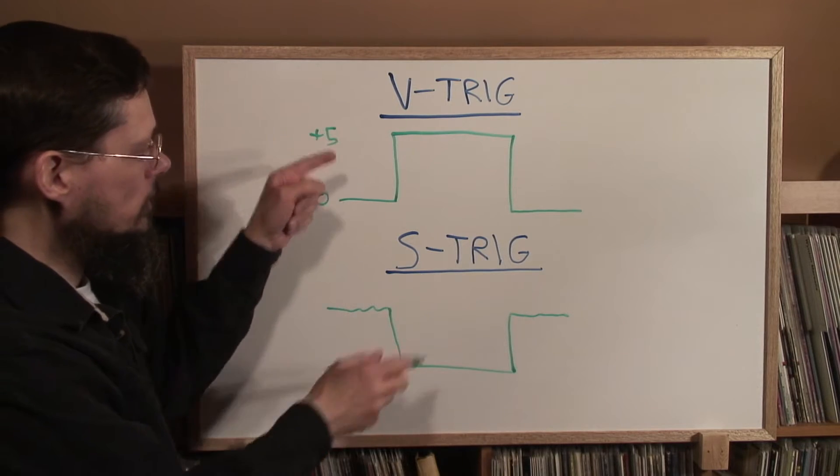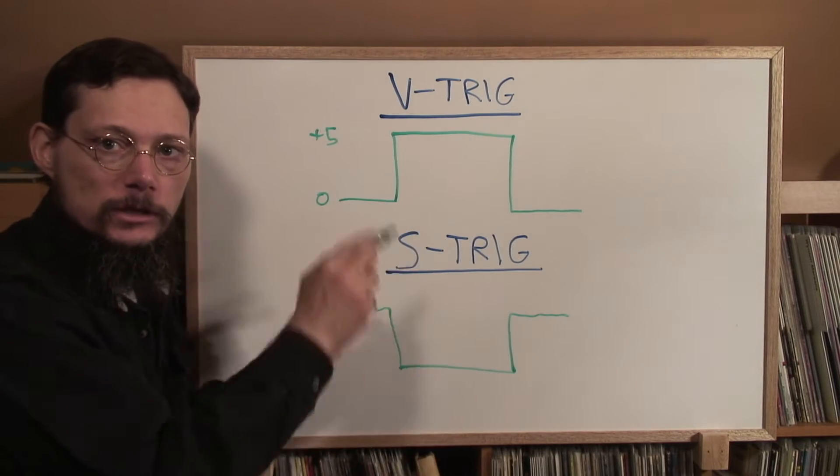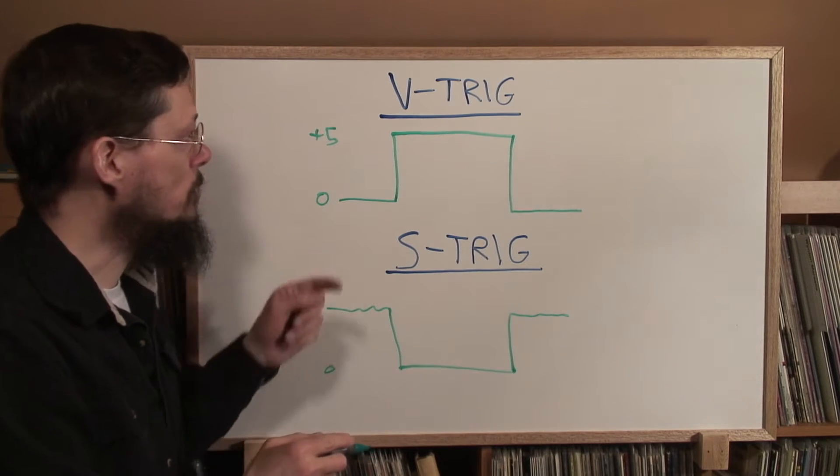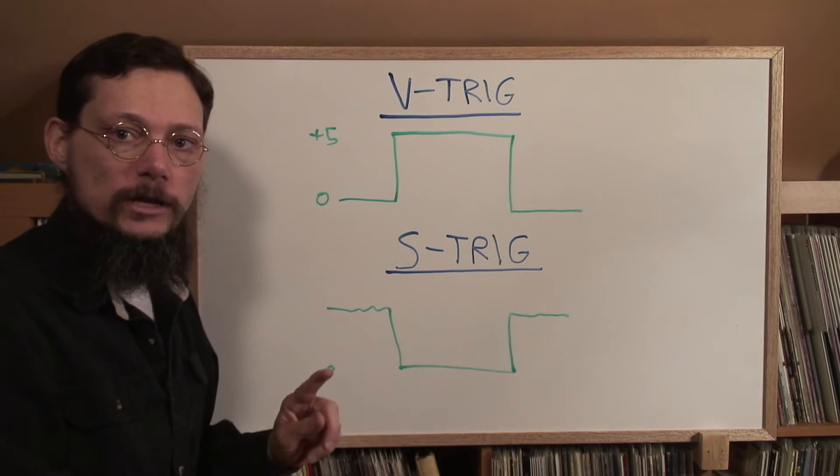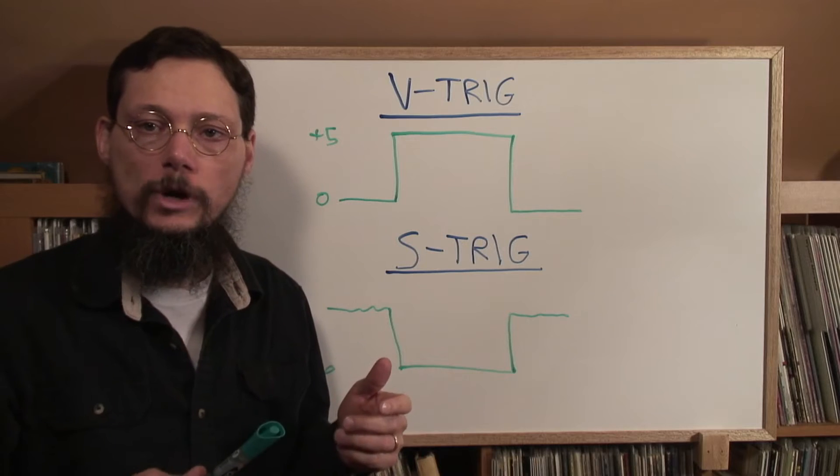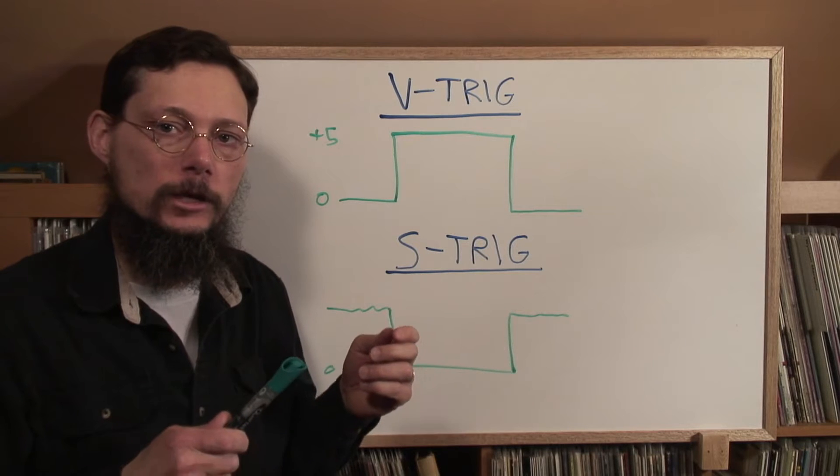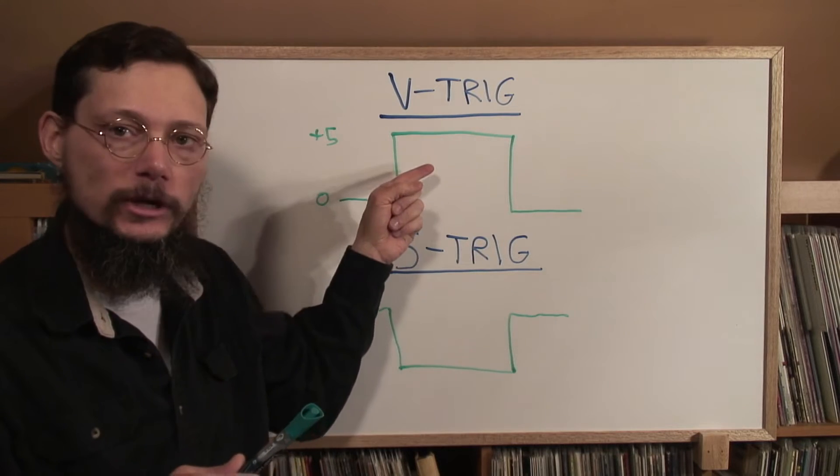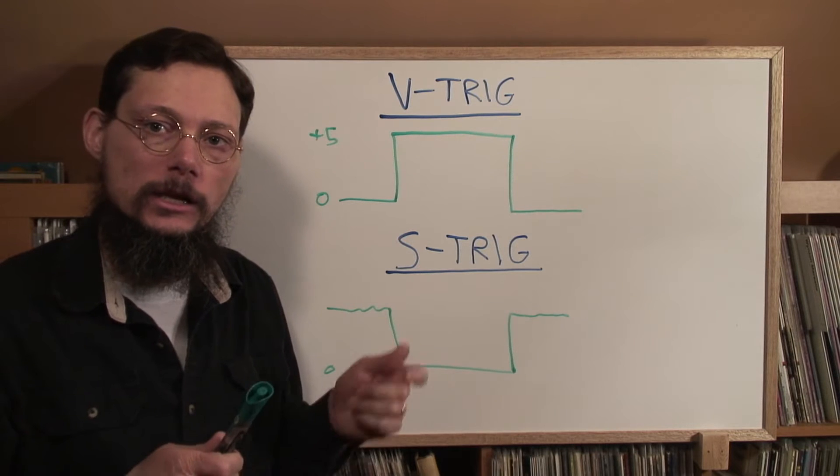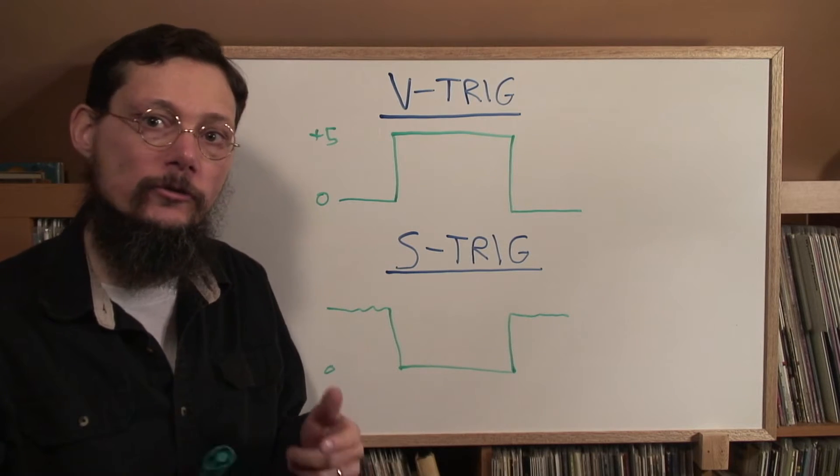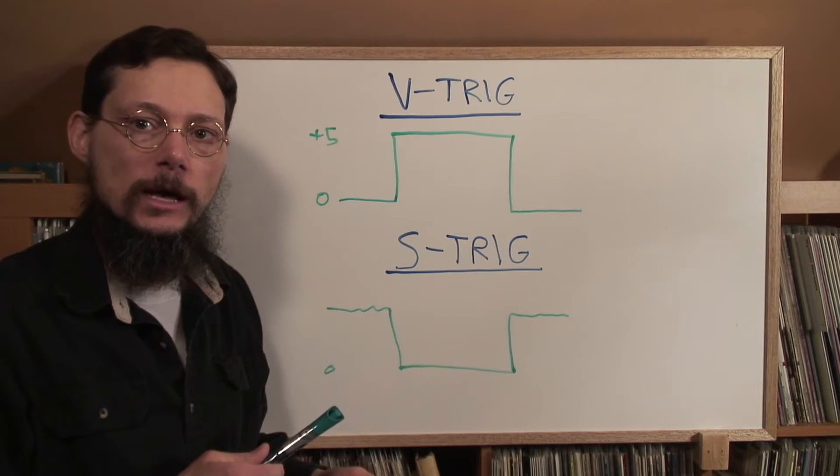Now if you look at the V-trig and the S-trig, you'll see that they're inverted to each other. So when there's a key down and the V-trig is high, the S-trig is low, and vice versa. There's a one transistor inverter circuit that can be used to transform V-trigs into S-trigs. And using that, we can send S-trigs to the Moog source from the ARP Odyssey. Let me show you the schematic.